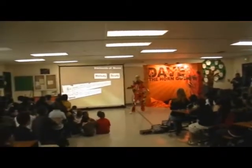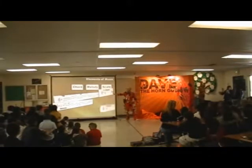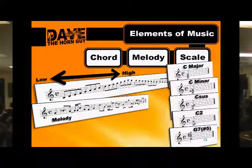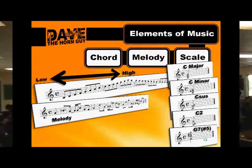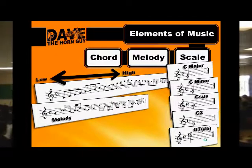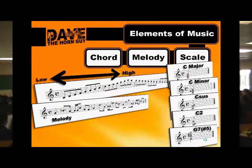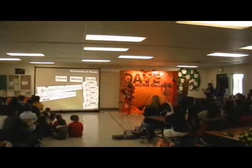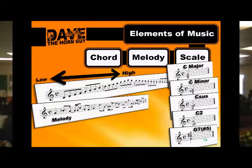All right, so there's melody, another concept within music. We can combine different pitches, and we can make chords. Take the C, the E, the G — combine those three for a C major chord right there. A C suspended, a C two, or the complex G7 with an augmented fifth.